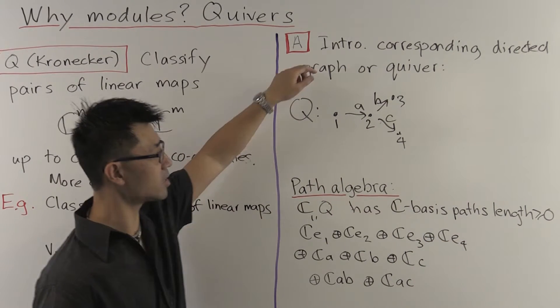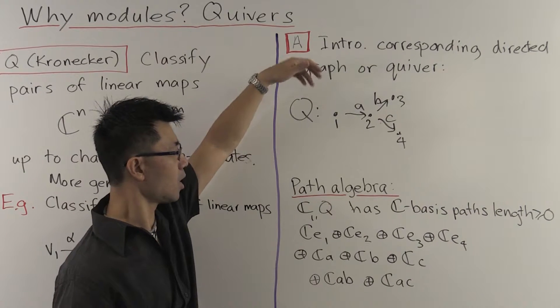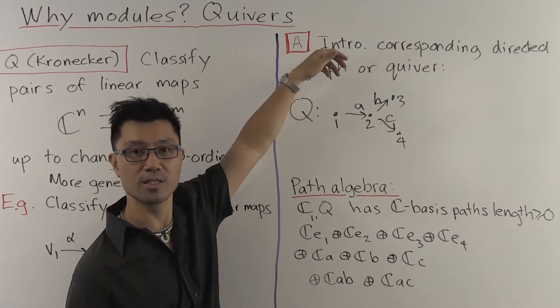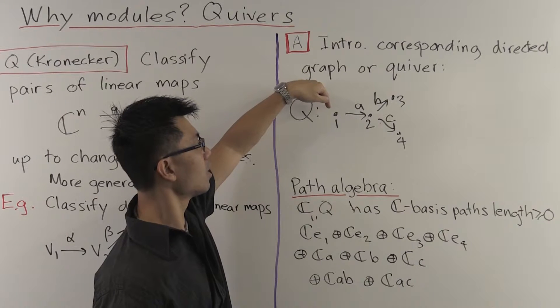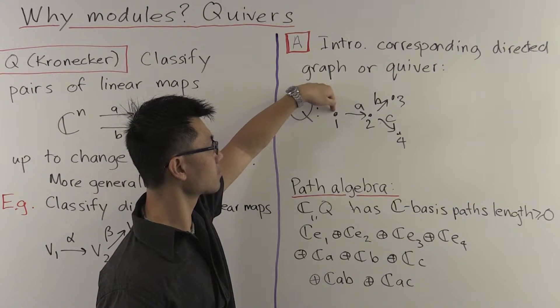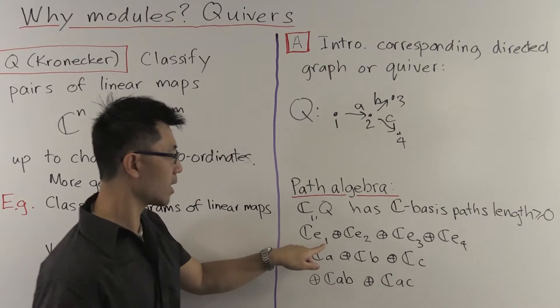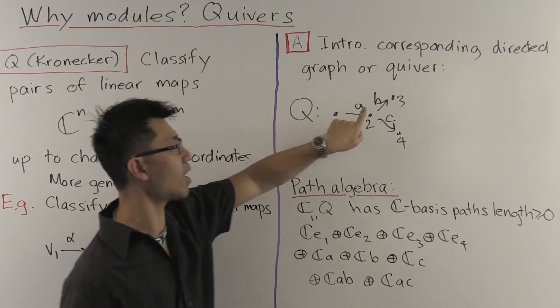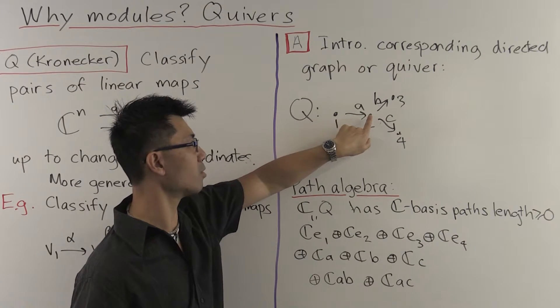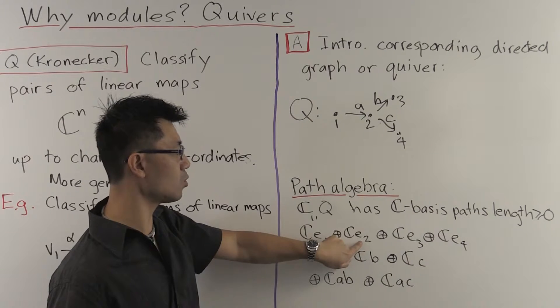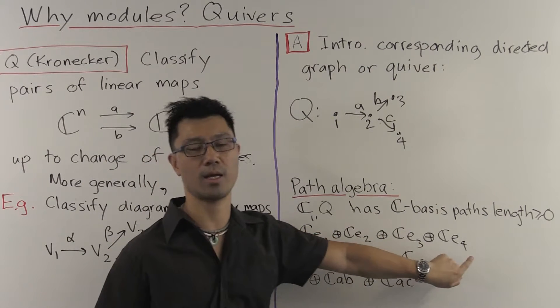Okay, so that's easy enough. Let's just go through those paths. So firstly, paths of length 0. For example, you can go from 1 to 1. So that's going to be E1. You can have a length 0 path from 2 to 2. That's going to be E2. And similarly, E3 and E4.